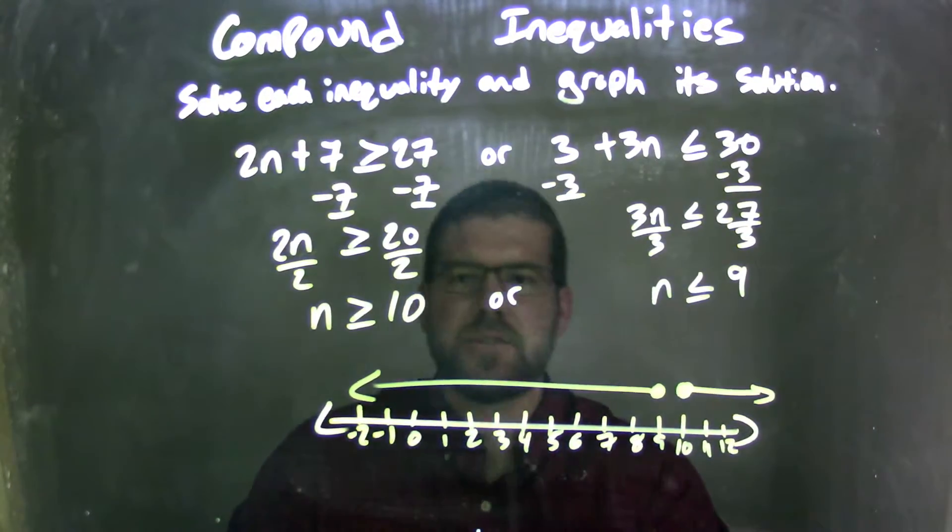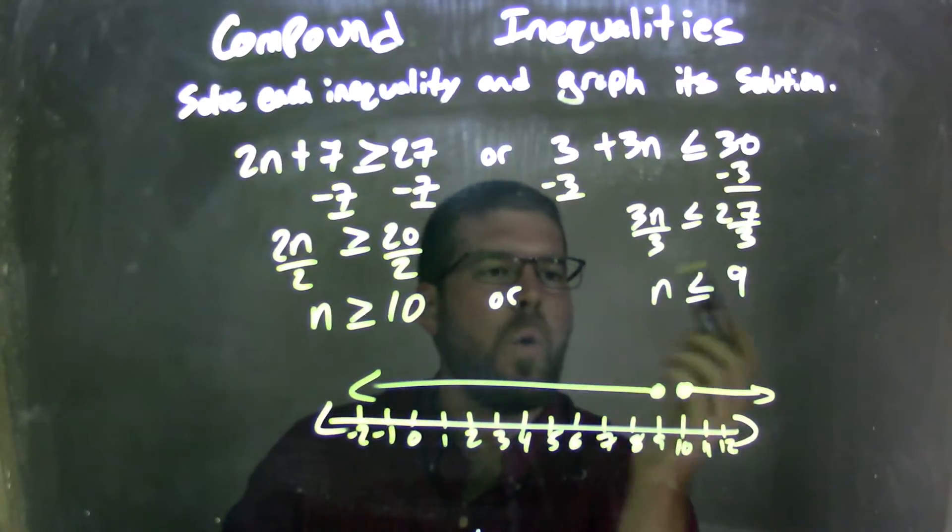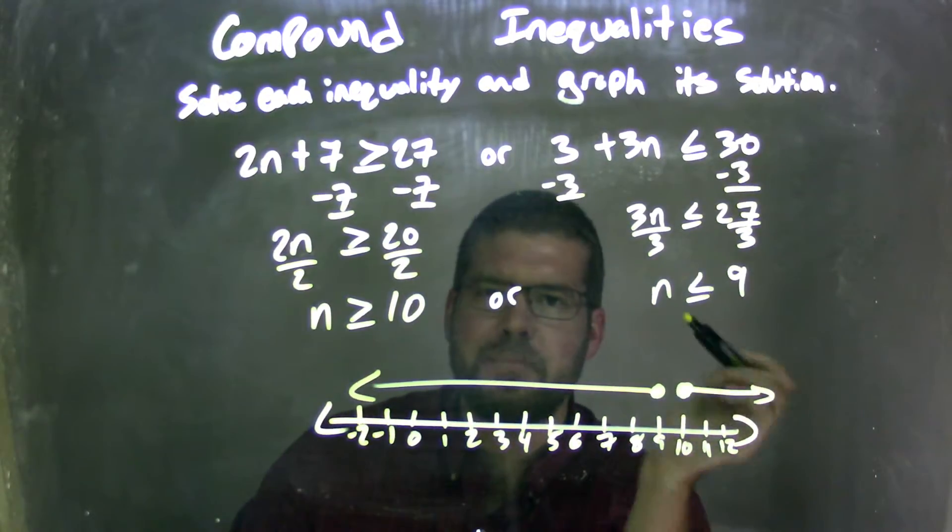And there we have it. We have our graph here that matches our final answer, our compound inequality, of n is greater than or equal to 10, or n is less than or equal to 9. So, let's recap.